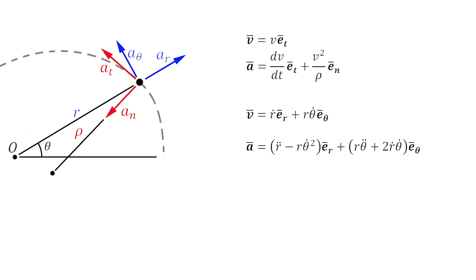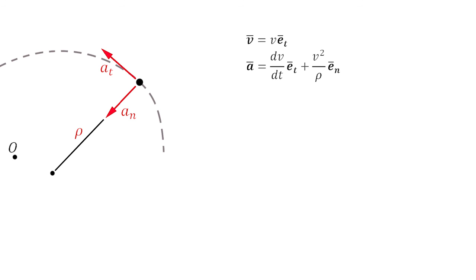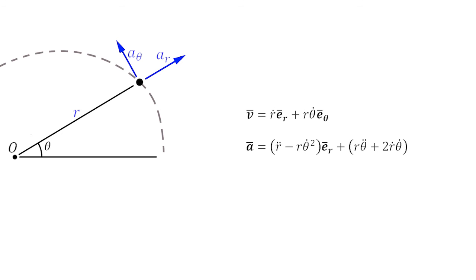Now, either system could be used in any given problem. The trick is knowing which system is best suited to the problem. Generally, if you are just looking at one point in time, and the information given is only with respect to the object in motion, that's a big hint that the tangential normal system would work better. However, if you have a fixed reference point and a reference distance, the polar system might work better.